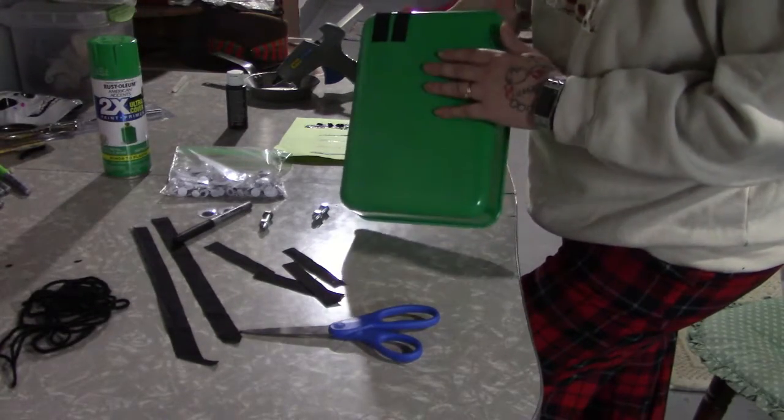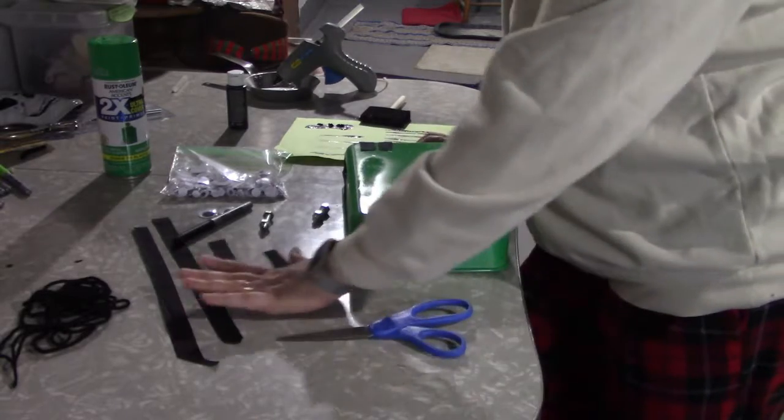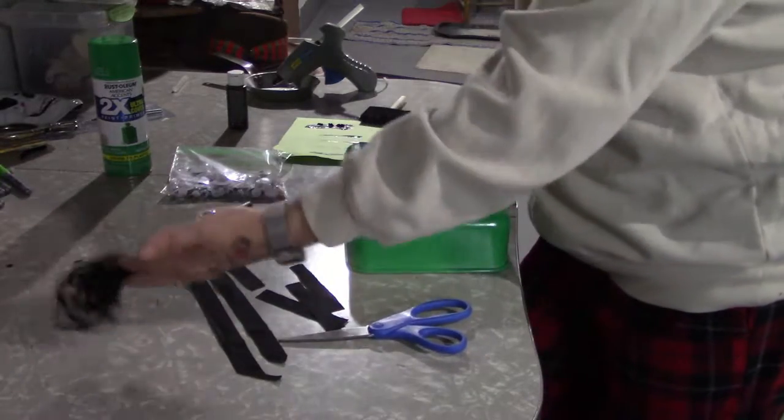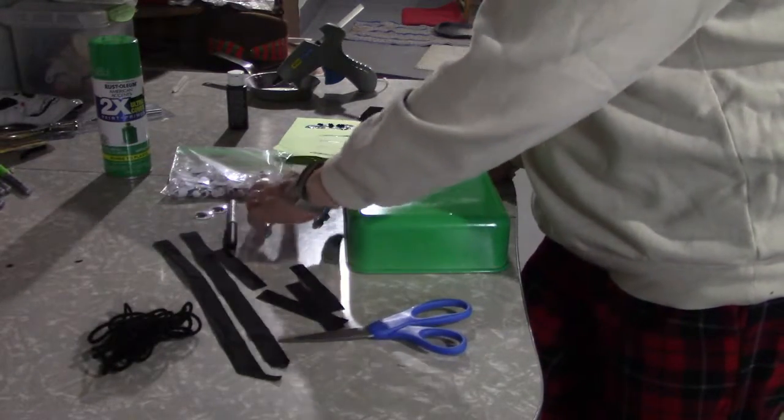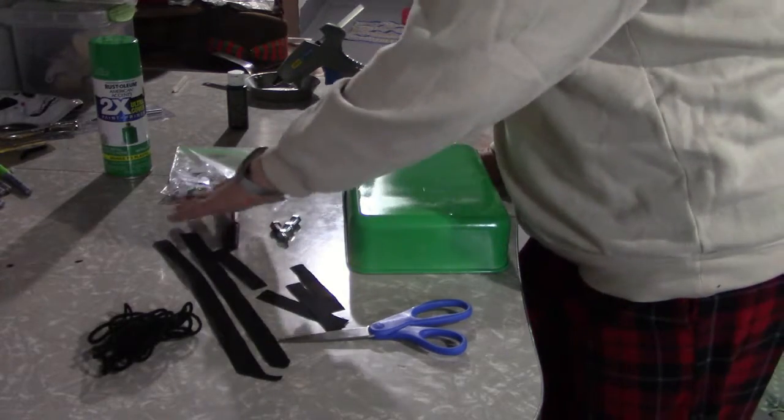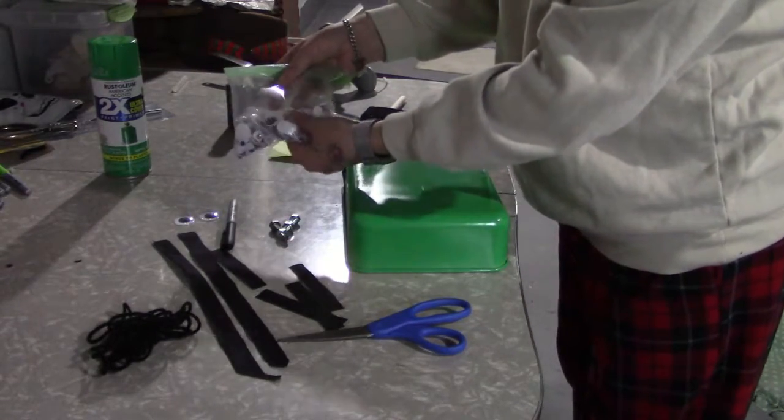So this is what you're going to need: a pan, a pair of scissors, some strips of material, some yarn, a permanent magic marker, two bolts, a couple eyes, some paint, some black paint.